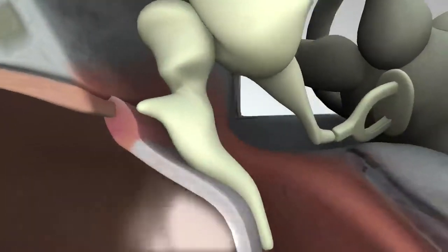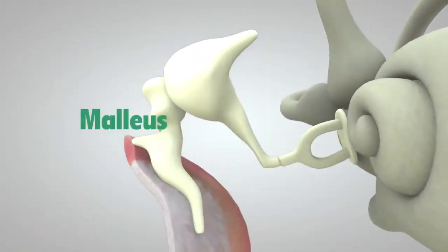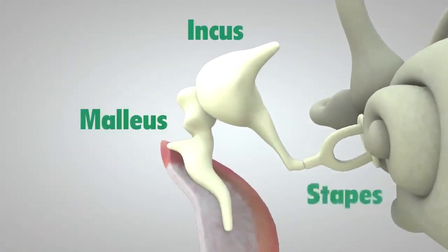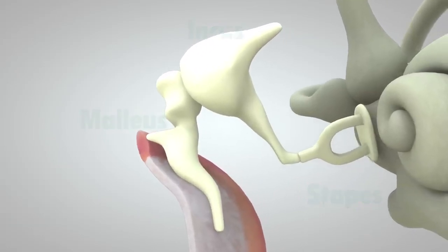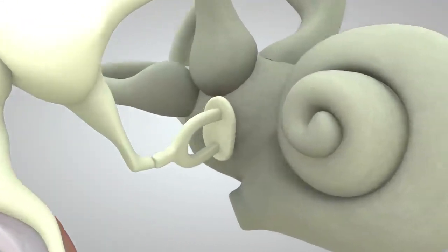which in turn vibrates three tiny bones called the malleus, incus, and stapes. These bones amplify or increase the sound vibrations and send them to the cochlea.